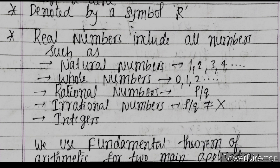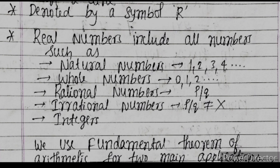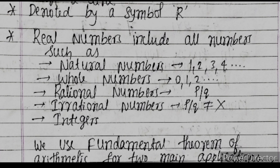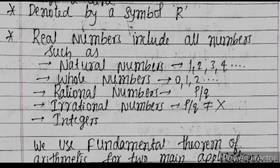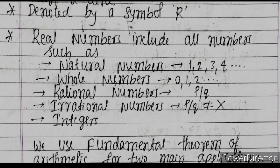Rational numbers are any numbers that can be expressed as P by Q. Numbers that cannot be expressed in the form of P by Q are called irrational numbers. Finally, integers include positive integers as well as negative integers.